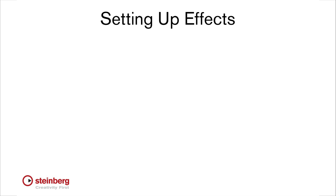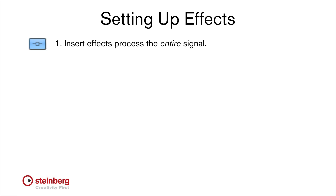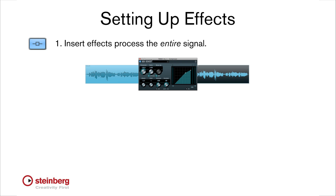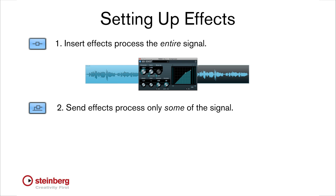For example, if I want to use a compressor to help control the volume of a track, I need the compressor to control the entire track, so I'll set it up as an insert. However, if I want to use an effect in a more subtle fashion, which is common for reverb, I'll set that up as a send effect. This allows the processed signal and the original signal to blend.